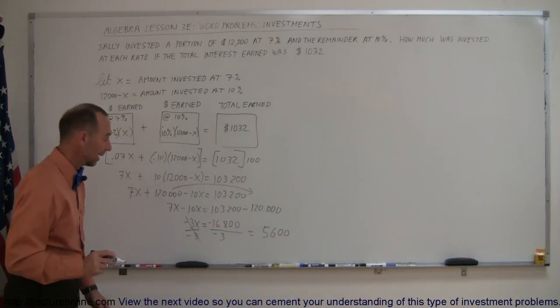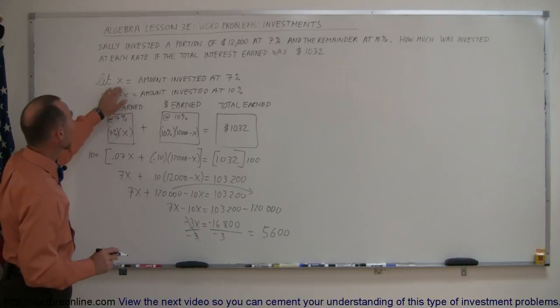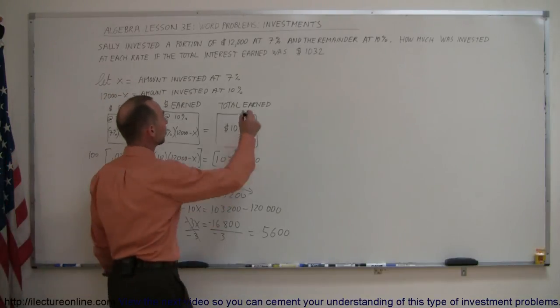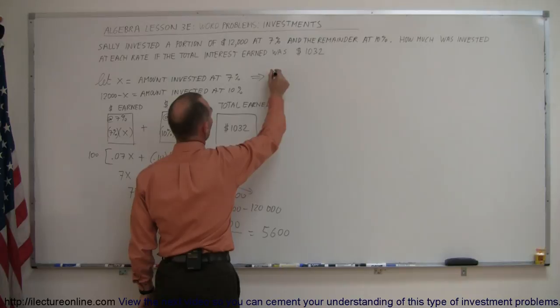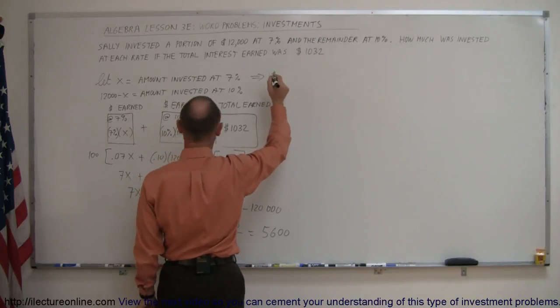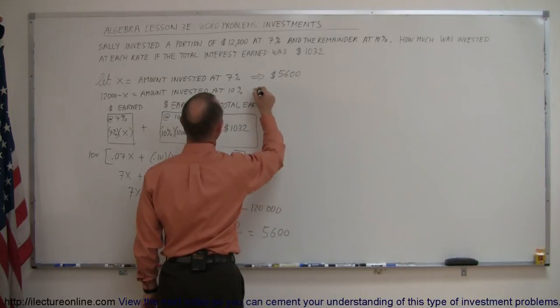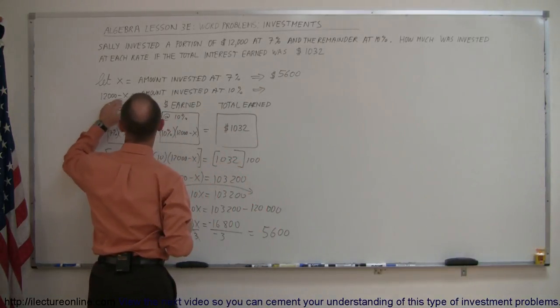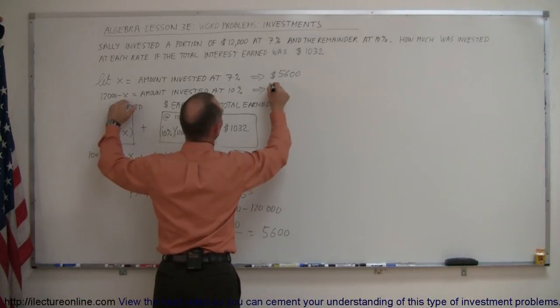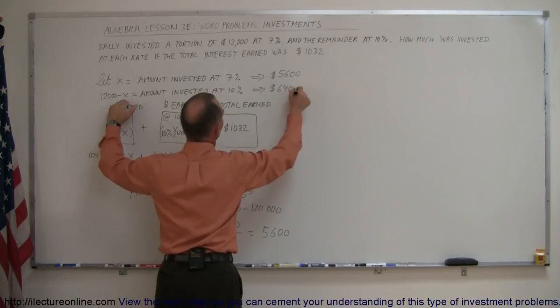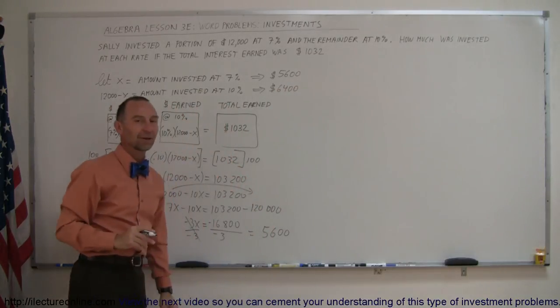And so, X was defined as the amount invested at 7%, which means that the decision was made by Sally to invest $5,600 at 7%, and the remainder, 12,000 minus that, which would be $6,400 at 10%. And that's how you figure that out.